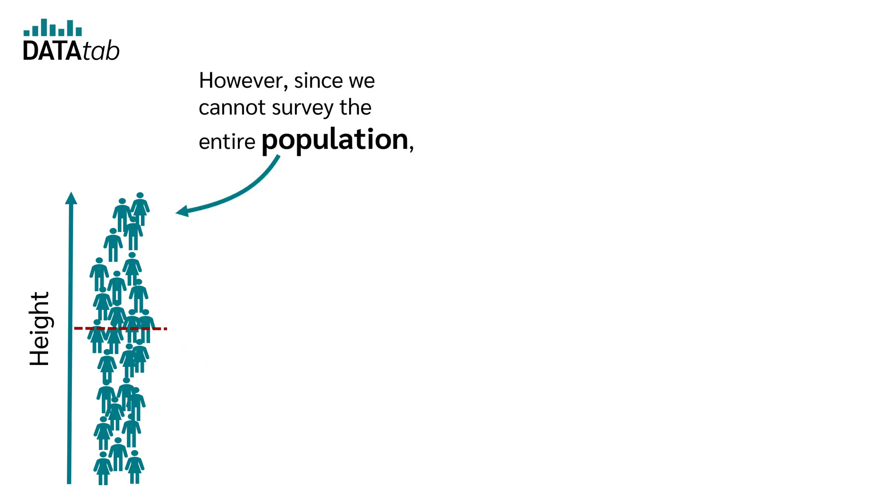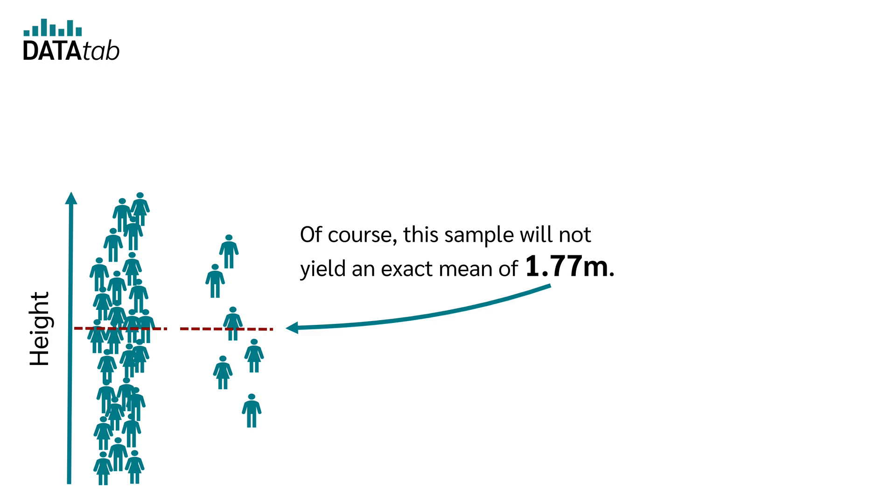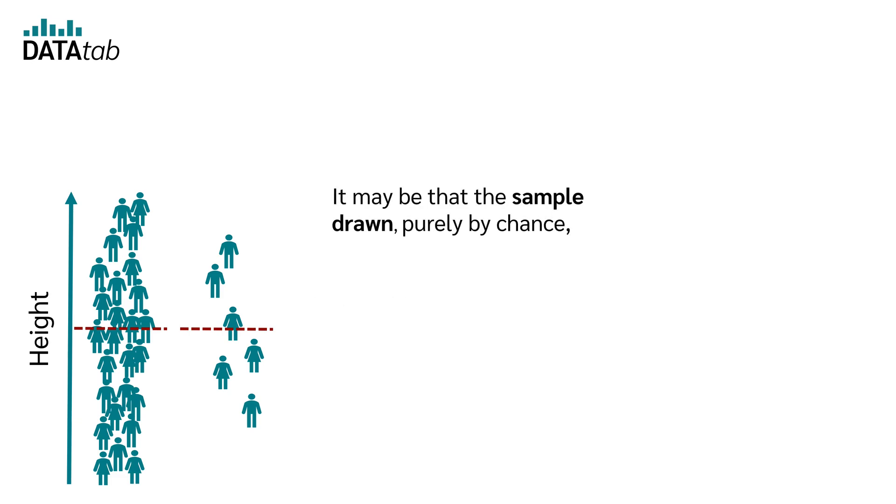However, since we cannot survey the entire population, we draw a sample. Of course, this sample will not yield an exact mean of 1.77. That would be very unlikely. It may be that the sample drawn purely by chance deviates by 3 centimeters, deviates by 8 centimeters, deviates by 15 centimeters, or purely by chance differs by any other value.